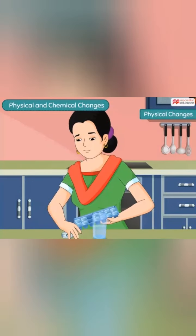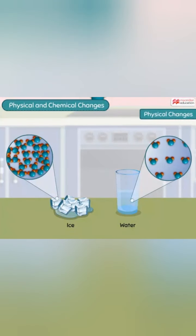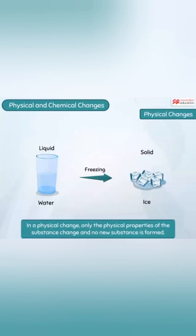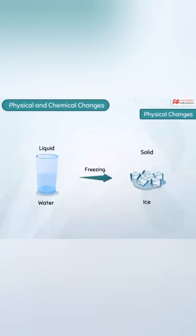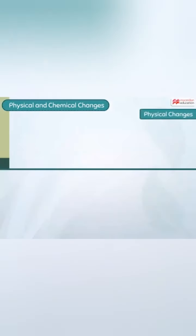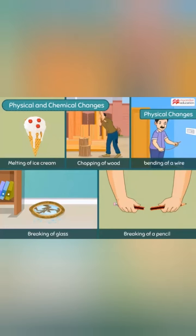When water is frozen, it forms ice. However, ice and water are made up of the same type of substance — water molecules. Freezing just changes the physical form of water from liquid to solid, but the molecules inside remain the same. Such a change where only the physical properties change and no new substance is formed is called a physical change. The formation of ice can be easily reversed by heating. Most physical changes can be reversed — melting of ice cream, chopping of wood, bending of a wire, breaking of a glass, and breaking of a pencil are all physical changes.